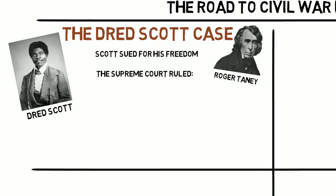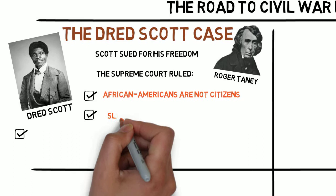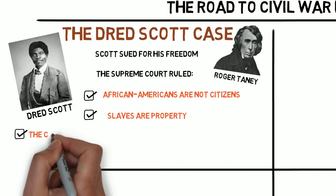The result of this case would have important ramifications on the issue of whether or not slavery could spread. In 1857, Supreme Court Chief Justice Roger Taney delivered the court's decision, and it was not a favorable one for Dred Scott or any other slaves. First, the court determined that since Dred Scott was not white, he was also not a citizen, thus establishing that no African Americans, free or slave, were citizens, and therefore were not protected by the Constitution.